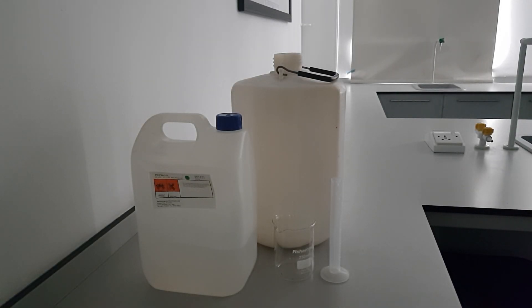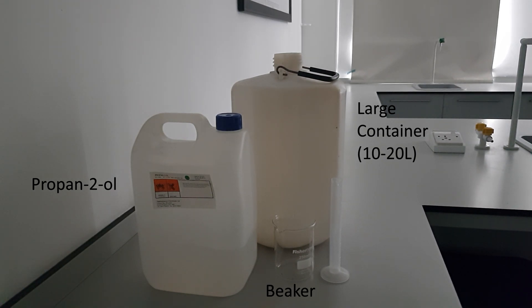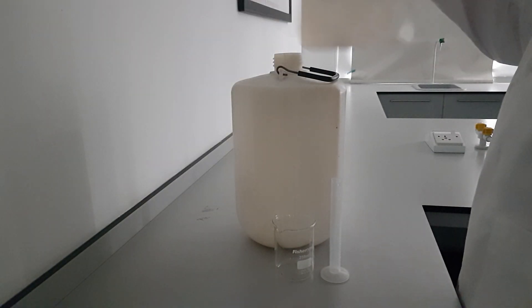What we need for this demonstration is some propan-2-ol, a large container (this one is about 10 liters), a medium-sized beaker, and a measuring cylinder. We start by measuring out a small amount of the propanol.